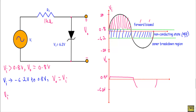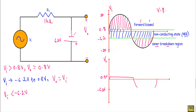When Vi is less than -6.2V, the zener diode will operate in the zener breakdown region and will act as a voltage regulator. We can replace the zener diode with its equivalent voltage source of Vz. The negative terminal points upward and the positive terminal downward, so Vo will be fixed at -6.2V. This gives us our complete output waveform.